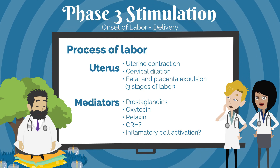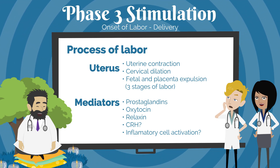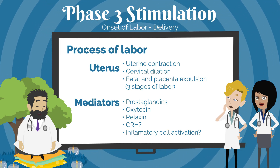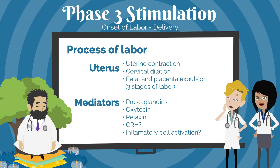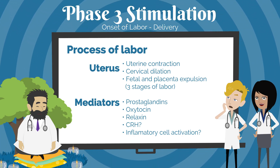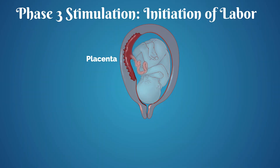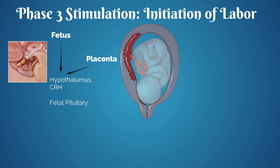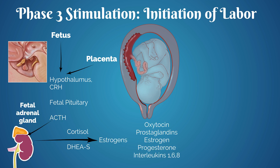Phase three, the stimulation phase, begins with the onset of labor and ends with delivery. Labor at term is a multifactorial event with changes in myometrium, decidua, and cervix over days and weeks. The initial trigger for labor at term is thought to be activation of the fetal hypothalamic-pituitary axis. The fetal HPA axis produces ACTH, and the placenta produces corticotropin-releasing hormone, or CRH, which act on the fetal adrenal glands to release production of DHEAS. DHEAS is then converted in the placenta to estriol and estradiol.